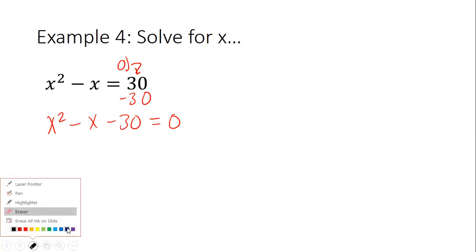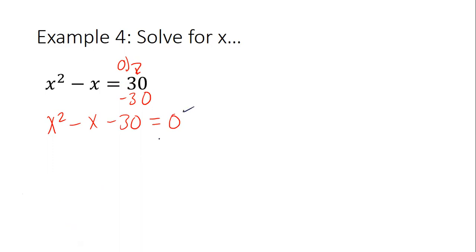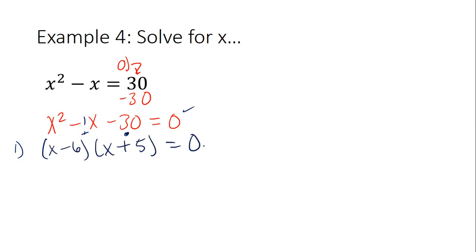Is the zero rule satisfied? Yes. Step one is to factor. When I'm factoring, I'm asking myself: what multiplies to give me negative 30 but adds to give me negative one? Negative six and positive five. So we have x minus six and x plus five equals zero.